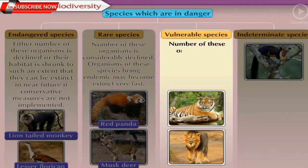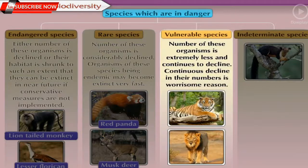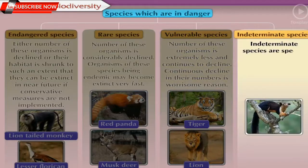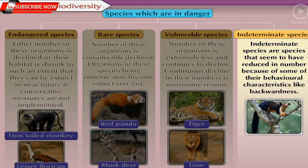Vulnerable species: the number of these organisms is extremely less and continues to decline. The continuous decline in their numbers is worrisome. Examples: tiger and lion. Indeterminate species are species that seem to have reduced in number due to some behavioral characteristics. Not much information is available about these species. One example is the giant squirrel.